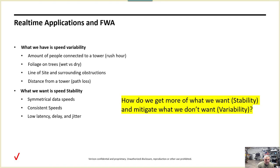When talking about real-time applications and fixed wireless access, two key statements: we have speed variability out of the box. Things like the number of people connected to a tower during rush hour, backhauls — those affect speed. Speed is something we need with real-time communications. Foliage on trees, summer versus winter — that affects RF.